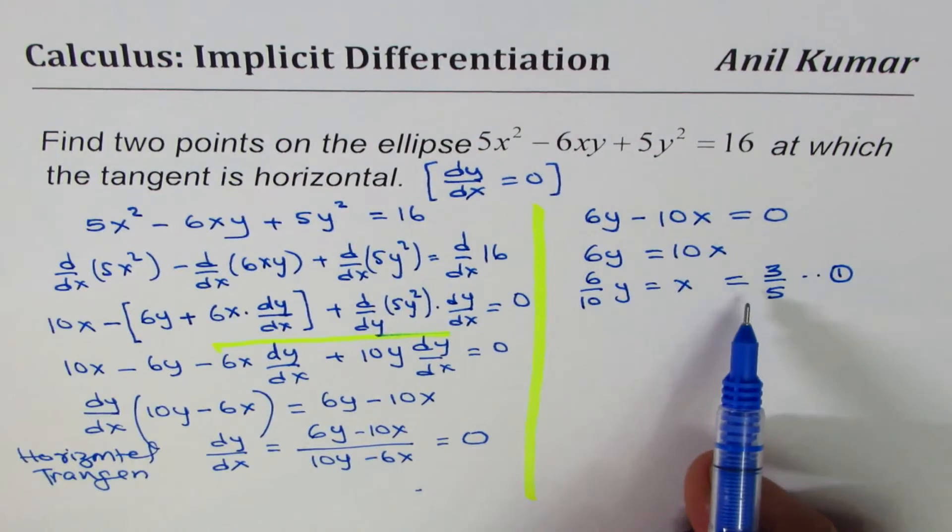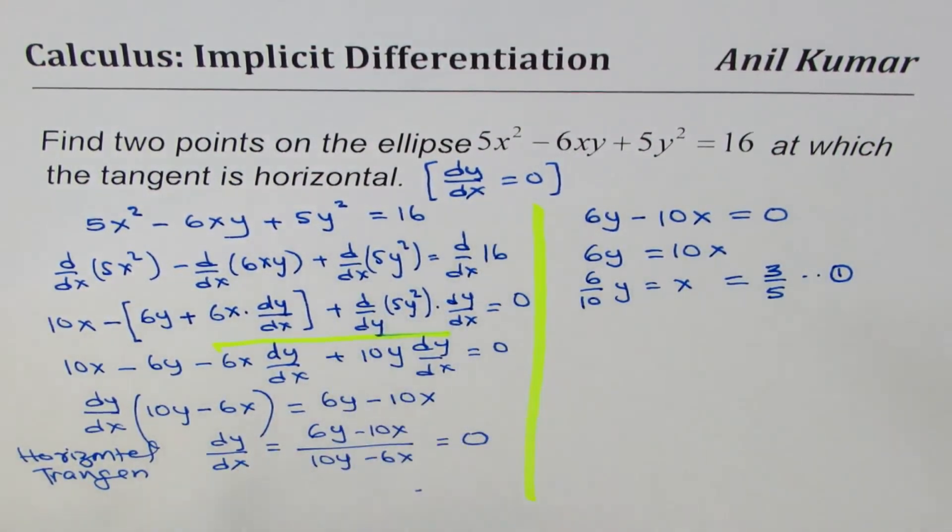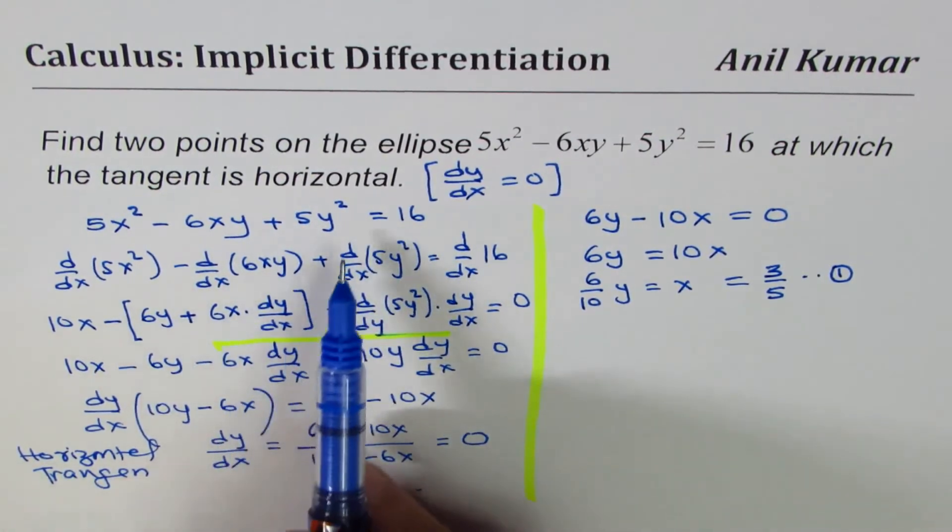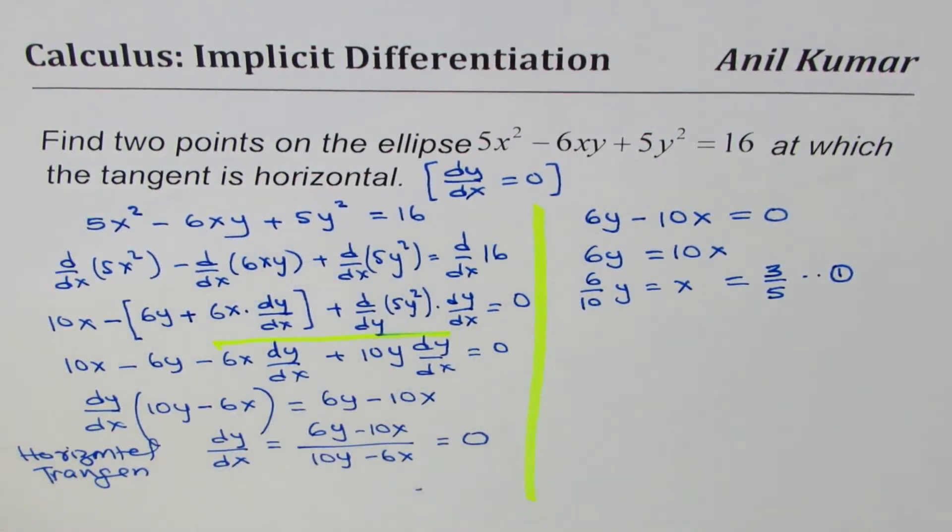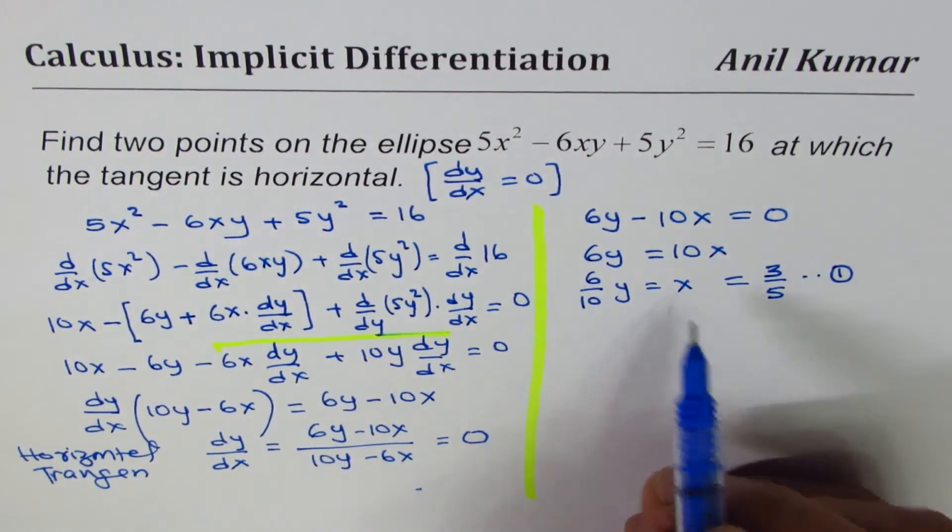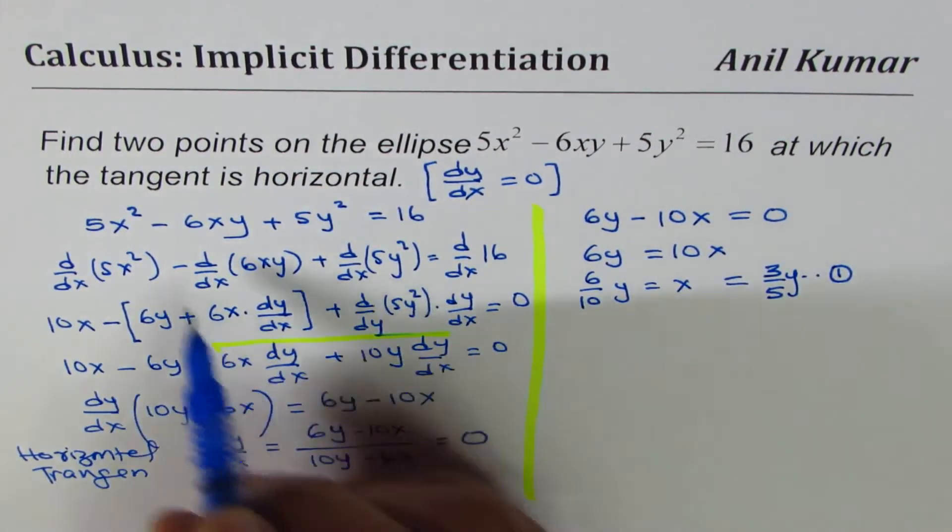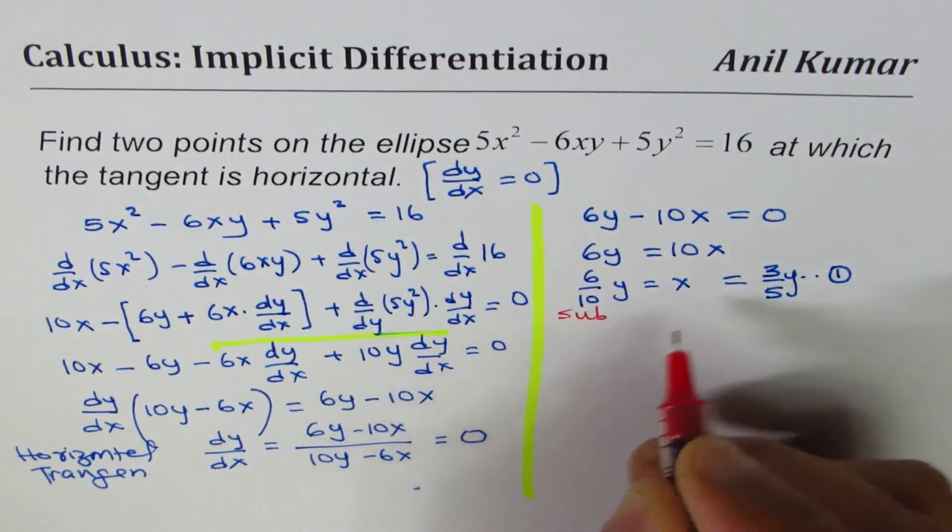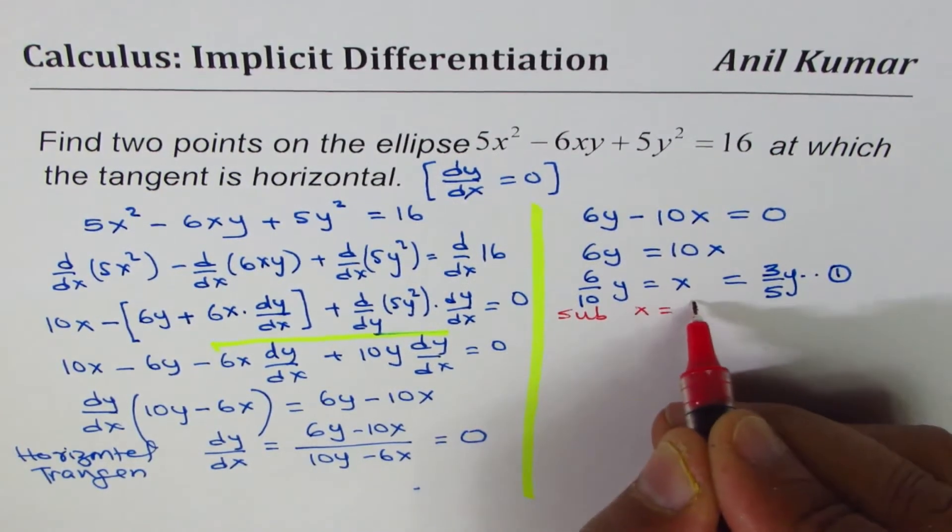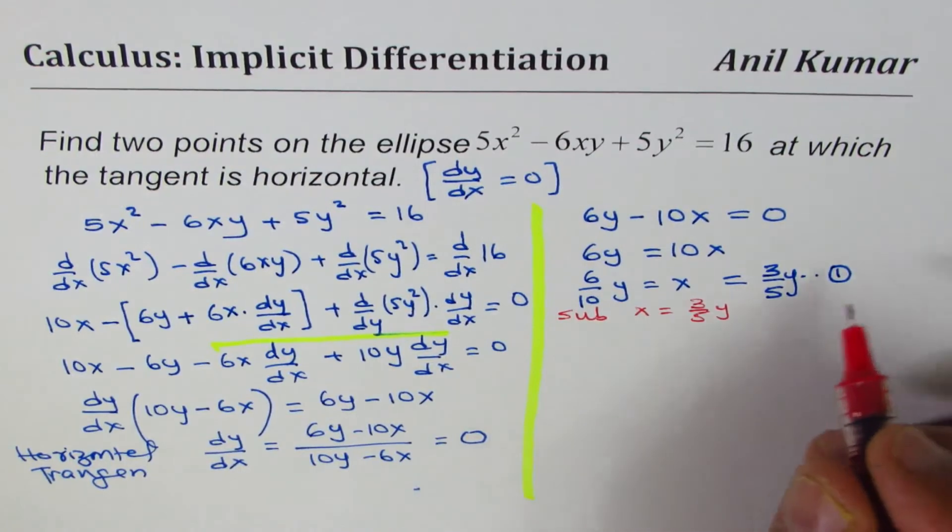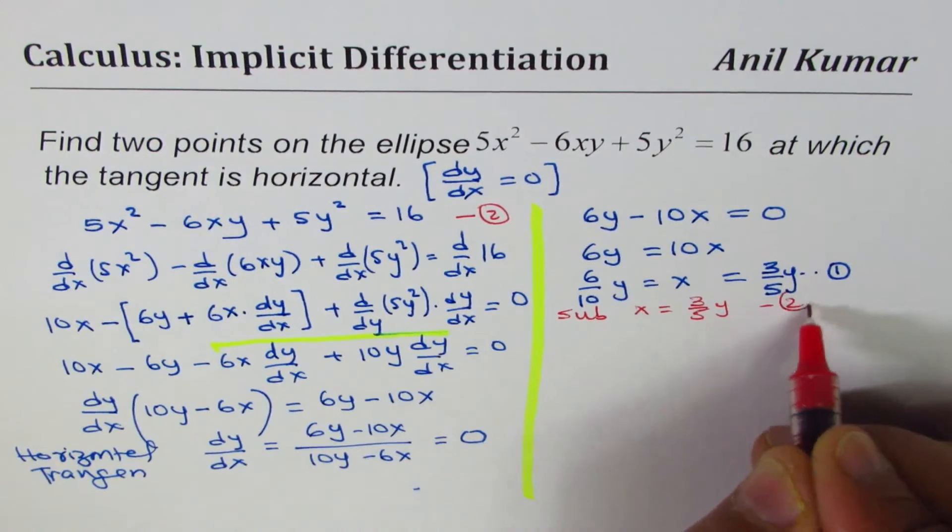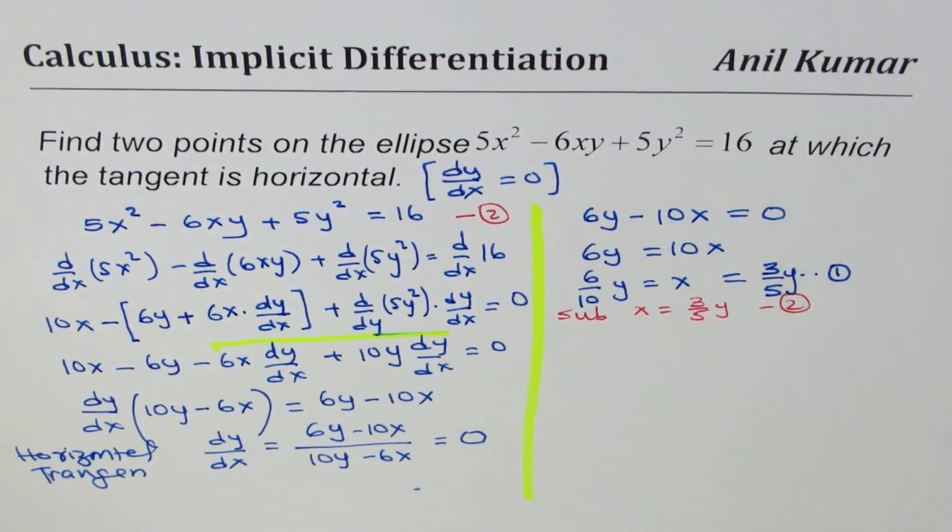Let me call this as equation number 1. I will substitute this value of x in our original equation, which is 5x² - 6xy + 5y² = 16 to find the value of y. So let us substitute x equals to 3/5y in this equation.